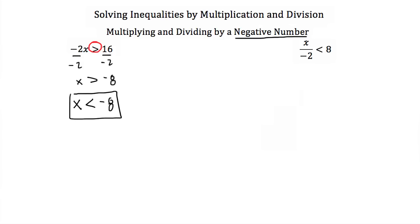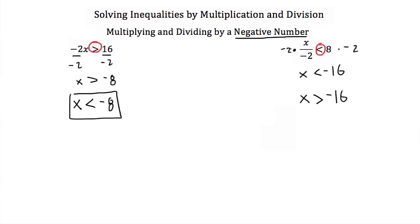If we have x divided by negative 2 is less than 8 and we multiply both sides by negative 2 because we're solving for x, we would get x is less than negative 16. But we multiplied by a negative number, which means we have to switch our inequality sign. So the opposite of less than would be greater than, and we'd have x has to be greater than negative 16.